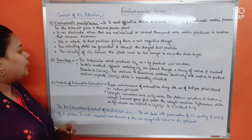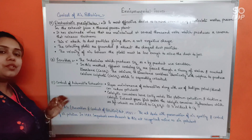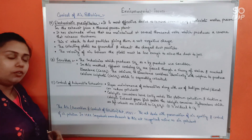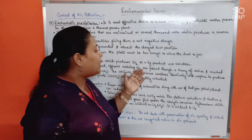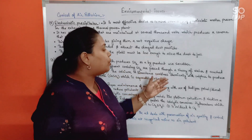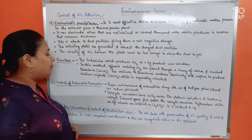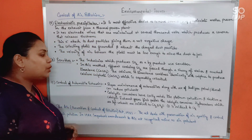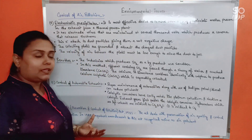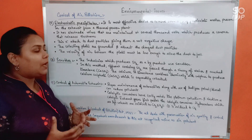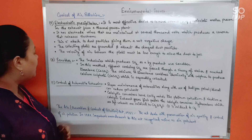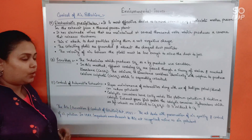A scrubber is installed in industries that produce sulfur dioxide as a by-product. In this method, effluent containing SO2 is passed through a slurry of water and crushed limestone (CaCO3). The calcium in limestone combines chemically with sulfur to produce calcium sulphate, which is separately collected. This simple chemical reaction separates sulfur from the air before it is released from the exhaust.